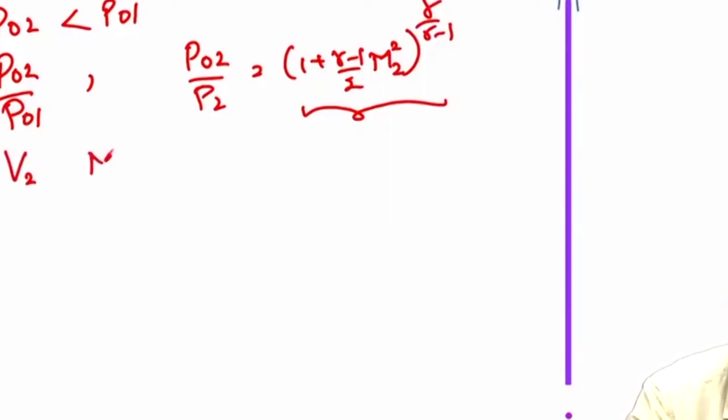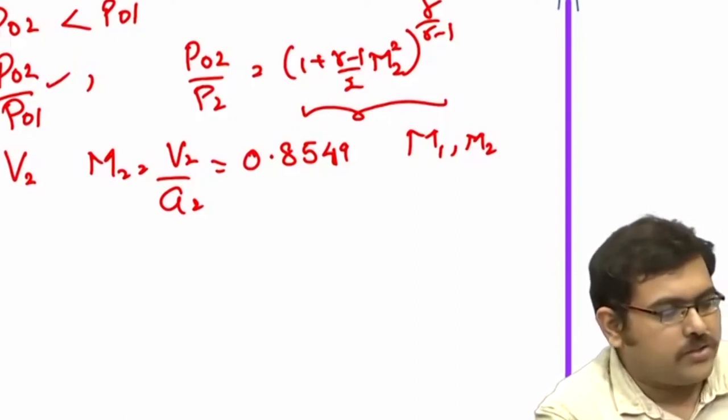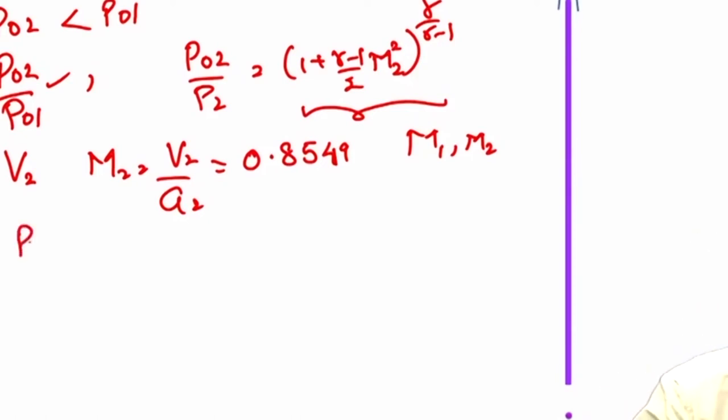You can express m2 as V2 by a2 and m2 is 0.8549, or this is readily available once you know m1 you can get m2. All these properties are tabulated or you can get the relations through online calculators, directly they will give you P02 by P01 and you can apply that and get to the value of P02. P02 is 218.6 kilo Pascal.